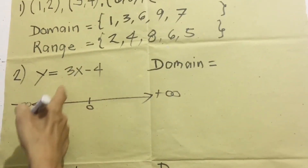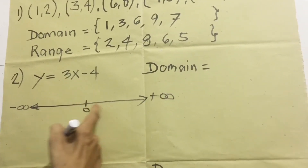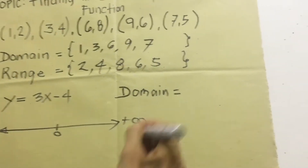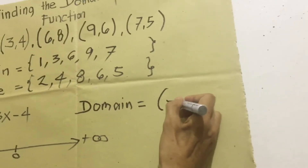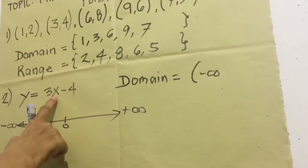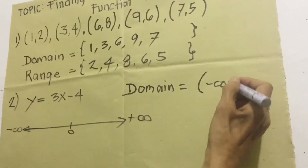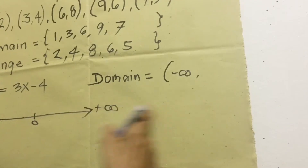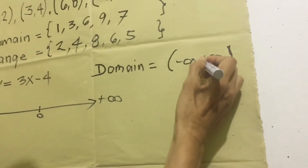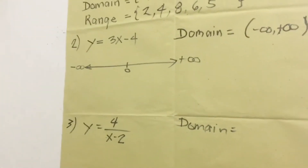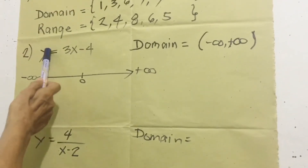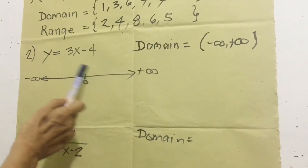Therefore all values of x belong here — either positive or negative — so we use all real numbers. For y = 3x + 4, the domain is from negative infinity to positive infinity, meaning x is the set of all real numbers, because any number we substitute gives a valid solution for y.